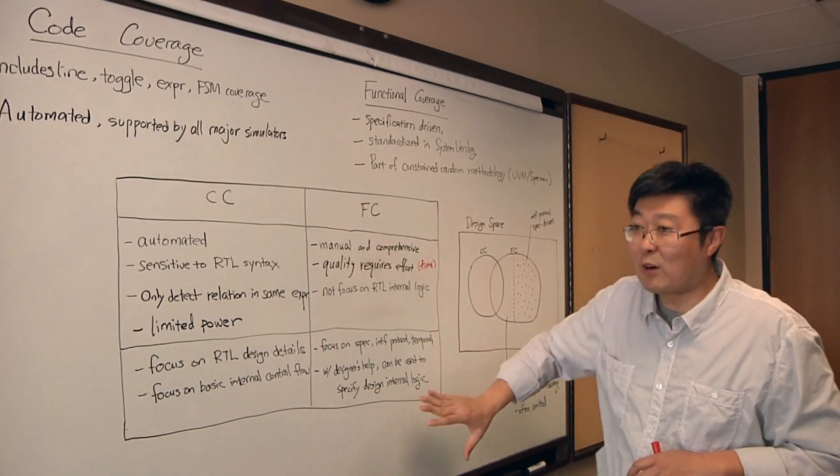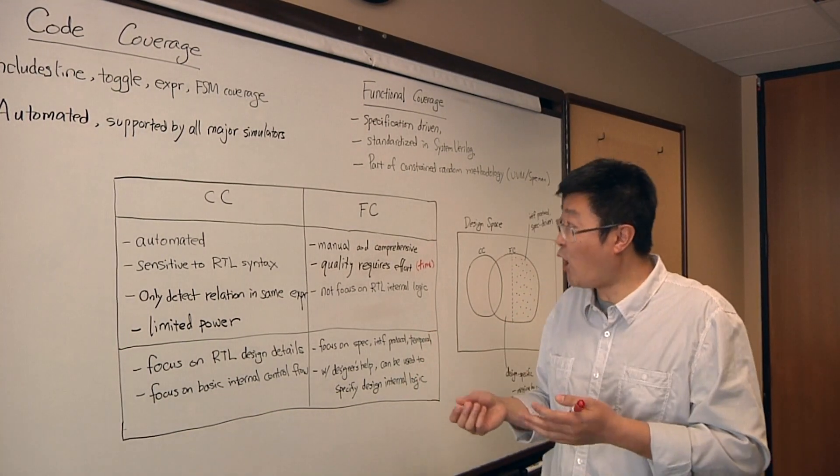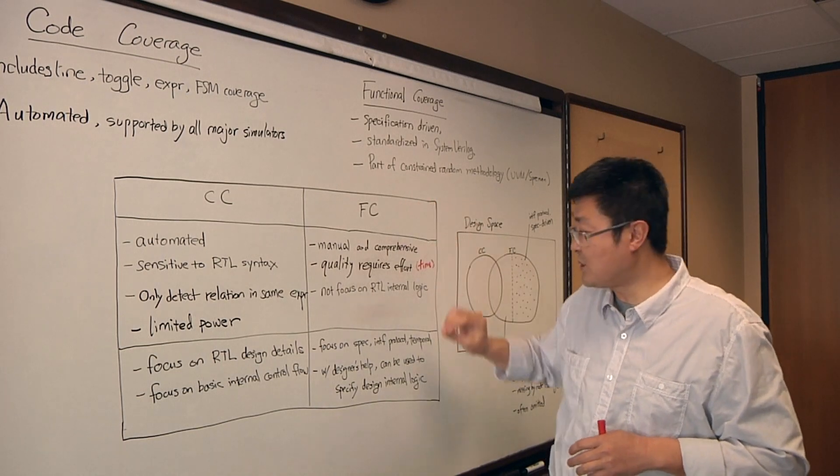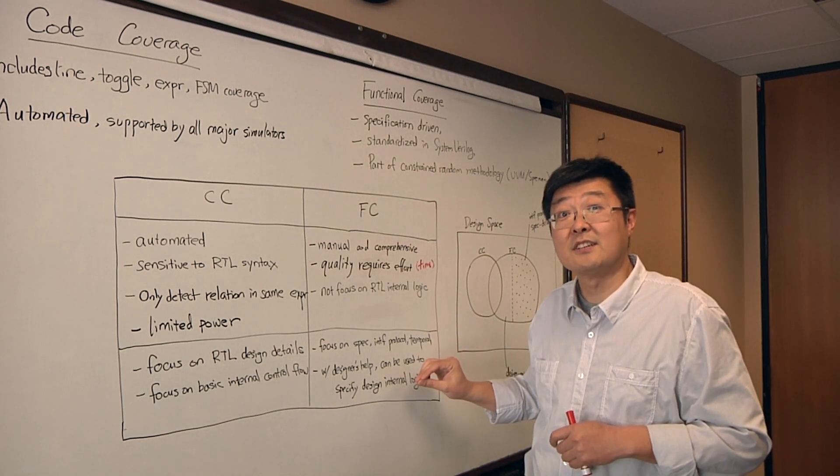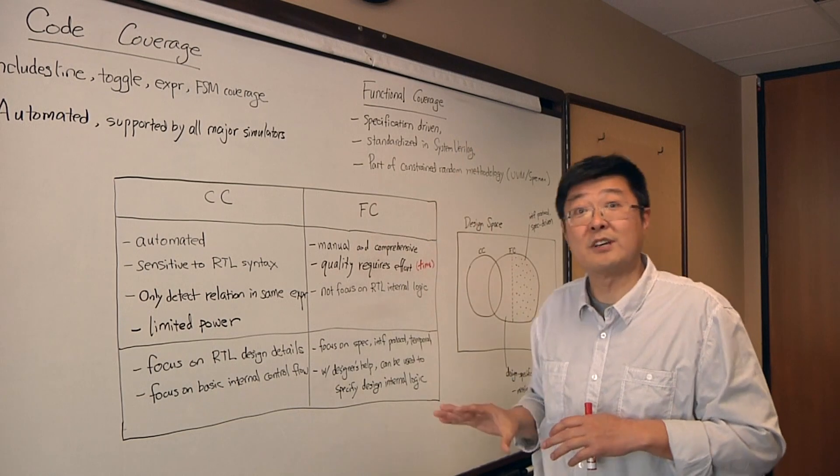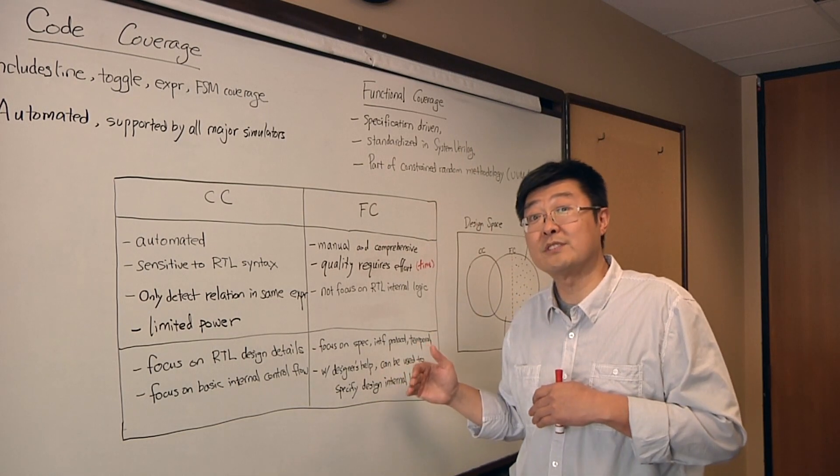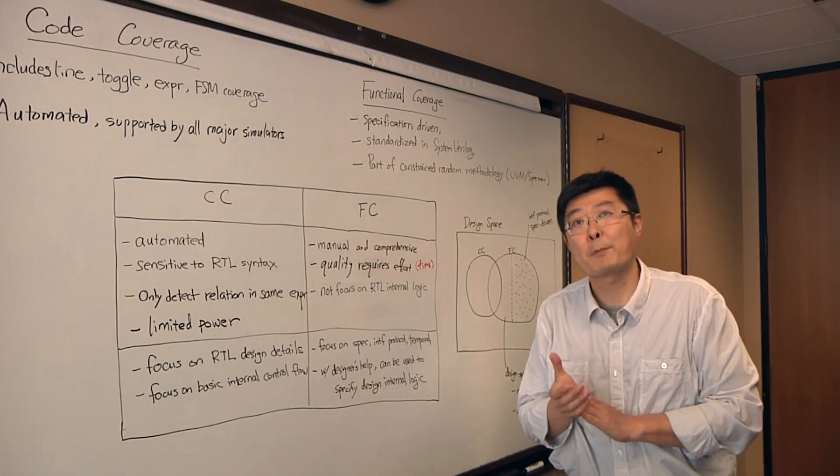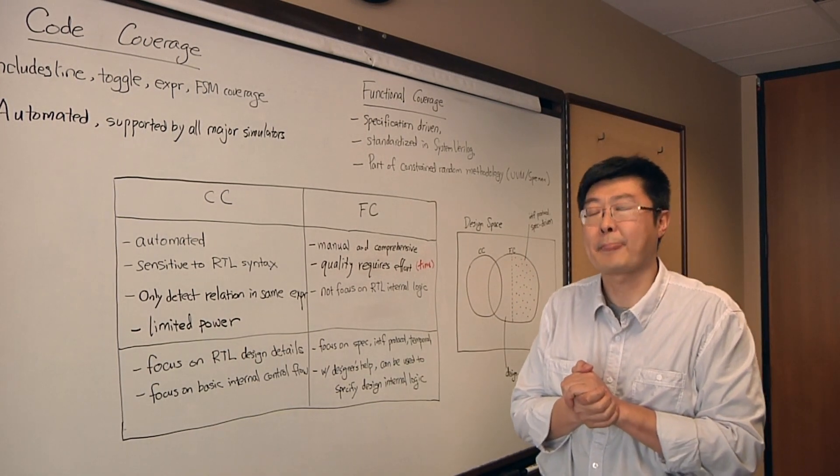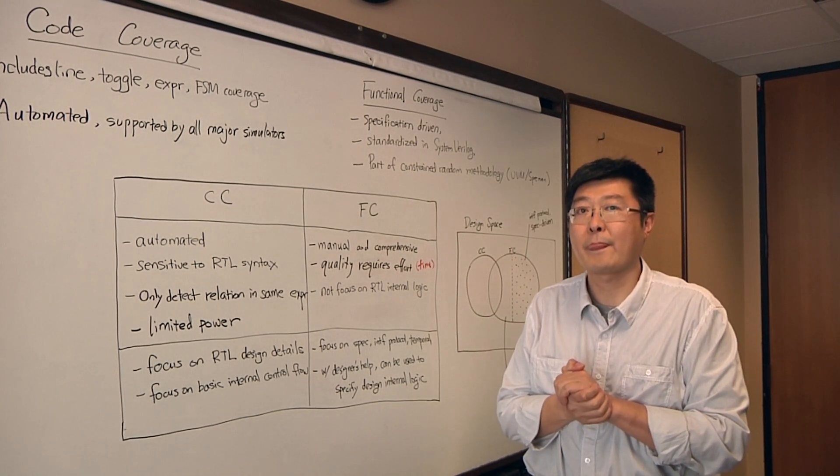In some complicated designs, with design help, you can use functional coverage to describe internal logic. The language itself allows you to do that. It's just because it's very high effort, people don't do it often. So what's the problem across these two? You've got code coverage and functional coverage. Where do people go wrong?